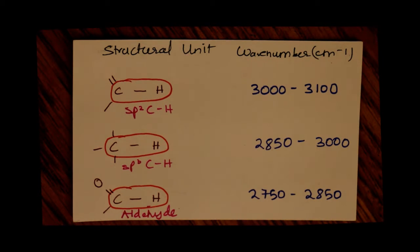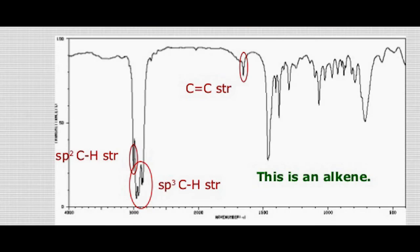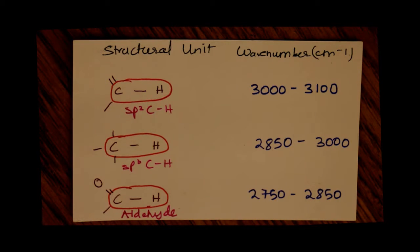For an sp2-hybridized carbon bonded to a hydrogen, the range is between 3000 and 3100 inverse centimeters. For an sp3-hybridized carbon bonded to a hydrogen, the range is between 2850 and 3000 inverse centimeters.